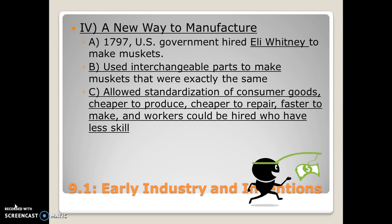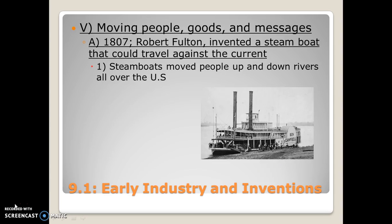Interchangeable parts allowed what we call the standardization of consumer goods — goods are made exactly the same, making life easier for both the factory owner and the consumer. It also makes goods cheaper to produce, cheaper to repair, faster to make, and allows factories to hire workers with less skill than those who made things by hand. Not only did we build manufactured goods quicker, cheaper, and easier, we also began to move people, goods, and messages faster across the nation.